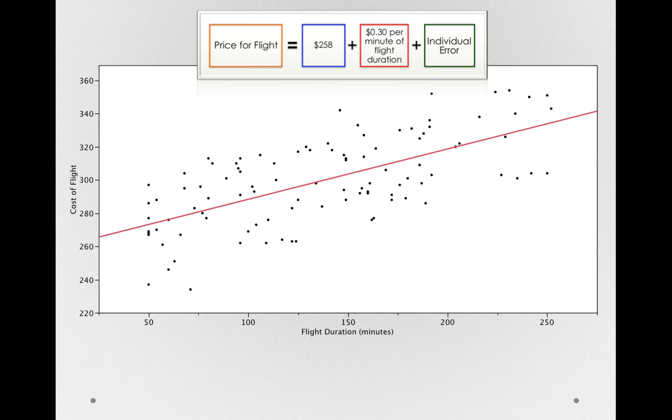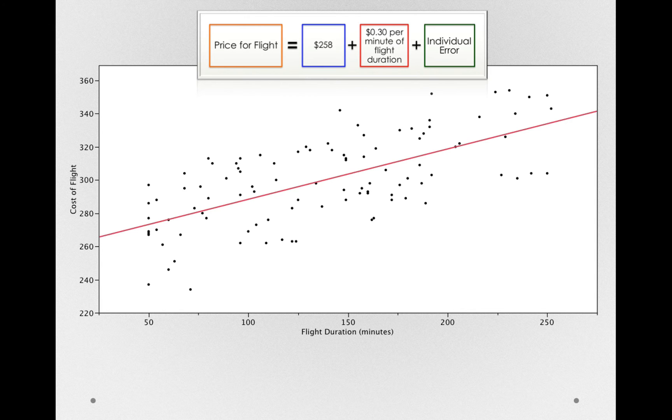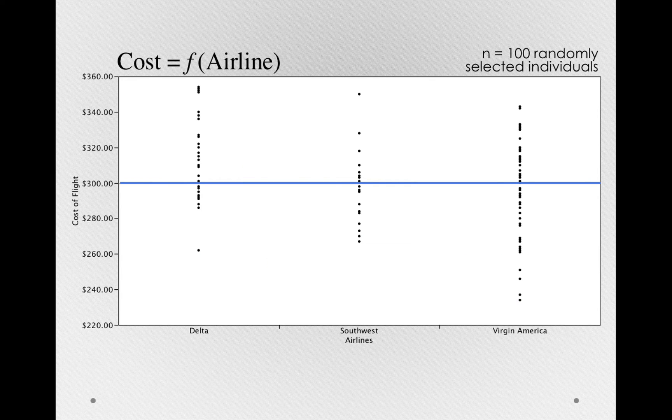Now, instead of using a quantitative predictor like flight duration, let's try to explain these differences among people, the differences in how much they spent, in terms of a grouping variable, like we did for parking permit costs. In this case, it would make sense to represent it in terms of the airline, or something else that groups these individuals. Here we have the Delta group, the Southwest group, and the Virgin group.